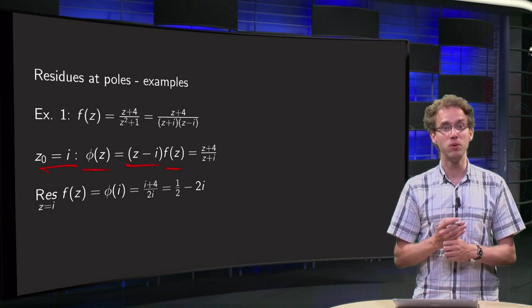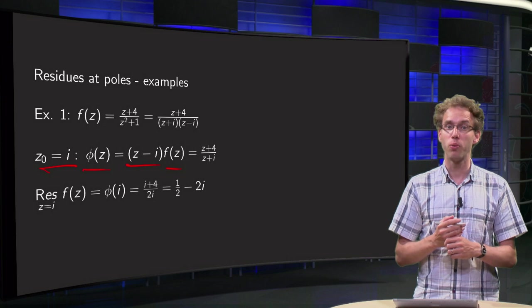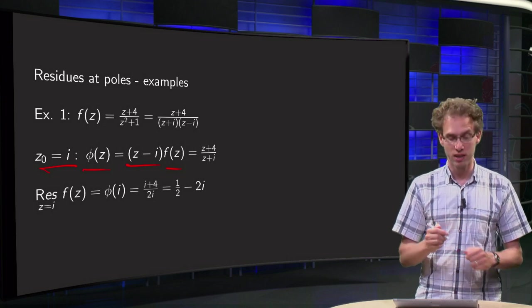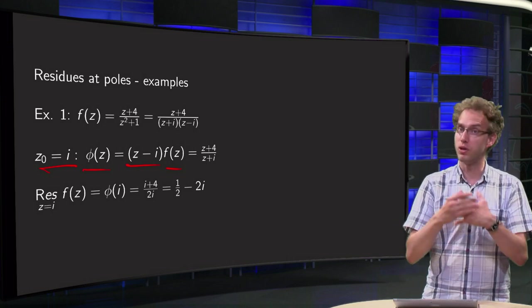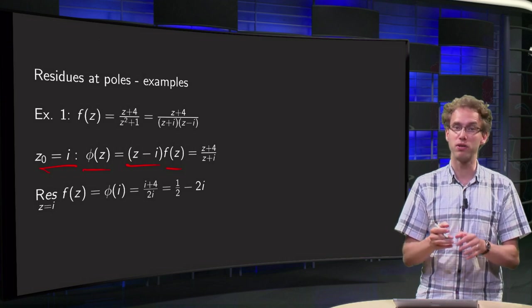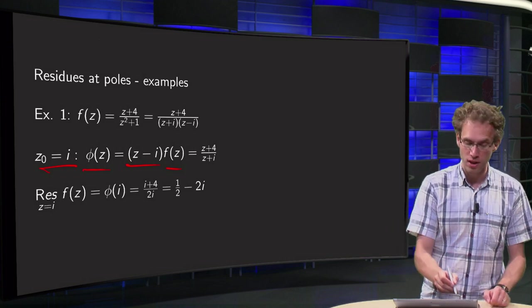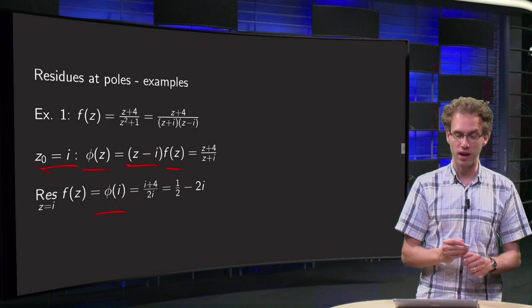Then we can compute the residue. Because we have a pole of order 1, the residue at i of f of z equals, well, we don't have to differentiate, we don't have to divide by n factorial or something like that. It's just phi of i equals,